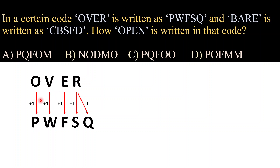The approach to code the word 'over' is: O plus one means the alphabet just after O in the alphabetical series; V plus one means the alphabet just after V, which is W; E plus one means the alphabet just after E, which is F; R plus one means the alphabet just after R, which is S; and R minus one means the alphabet just before R, which is Q. So the fourth letter of the code is R plus one and the fifth letter is R minus one.